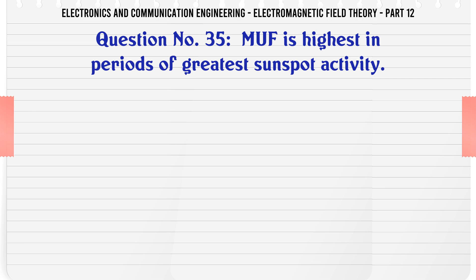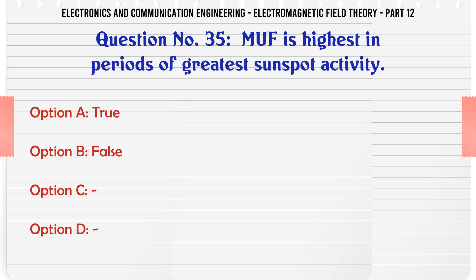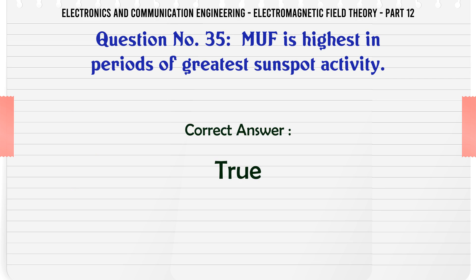MUF (Maximum Usable Frequency) is highest in periods of greatest sunspot activity: A. True, B. False. The correct answer is True.